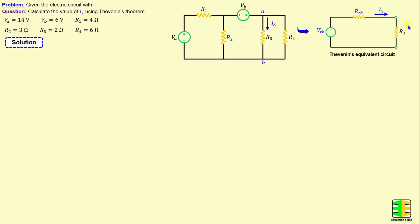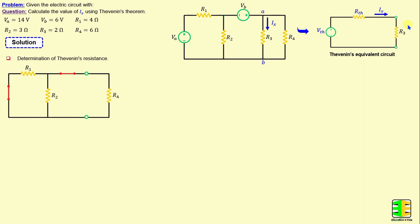I will start first with the determination of the Thevenin resistance. This step can be done by removing all independent sources in the circuit, which means the voltage sources will be replaced by a short circuit and the current sources will be replaced by an open circuit.